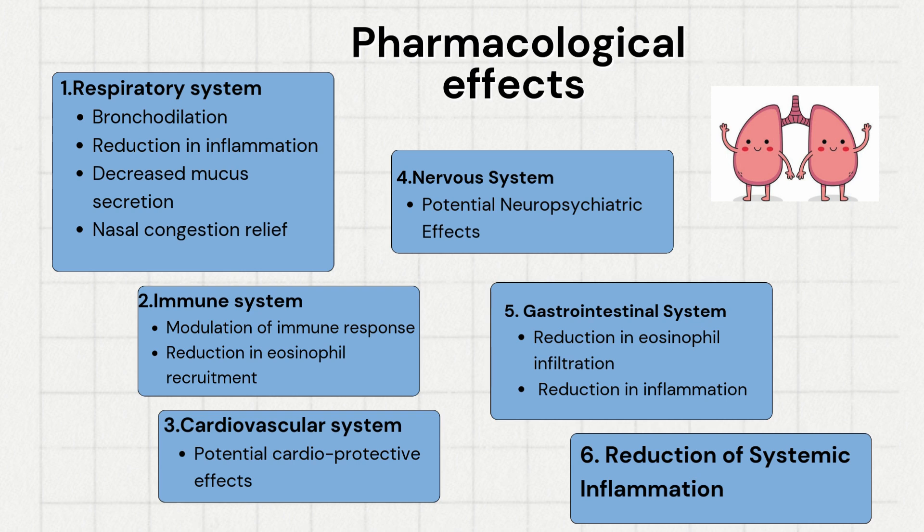In the cardiovascular system, Montelukast has potential cardioprotective effects. In the nervous system, it has potential neuropsychiatric effects. In the GIT, it reduces eosinophil infiltration and inflammation. Montelukast also reduces systemic inflammation.